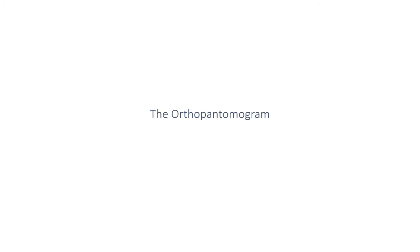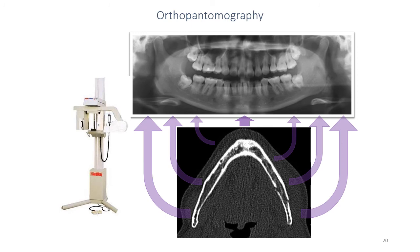The orthopantomogram — or OPG — works by exposing only a small area of the image receptor at one particular time. Over the course of the exposure, the x-ray tube and image receptor rotate around the patient, segment by segment. Subsequently, the curved structure of the mandible is shown as a flat structure across the plane of the image receptor.